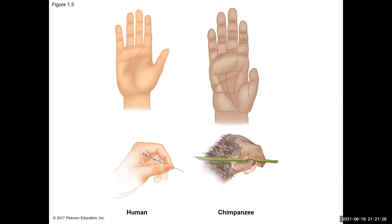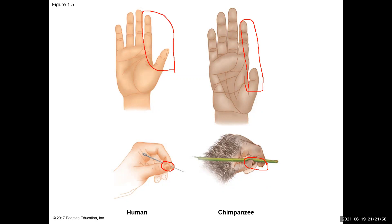An image shows the difference in hand structure between humans and chimpanzees. With opposable thumbs, you can bring your thumb and index finger tips together — other species can't do that, resulting in less dexterous hand function. A chimp, for example, is not going to be very good at threading a sewing needle because they lack that dexterity. It's a characteristic that Homo sapiens have that gives them an advantage in certain situations.